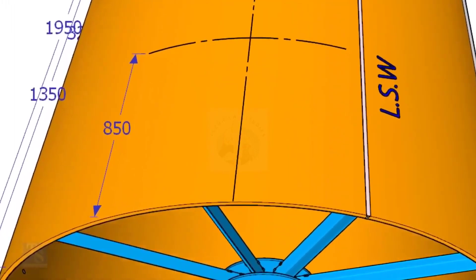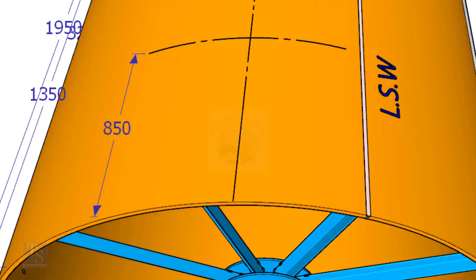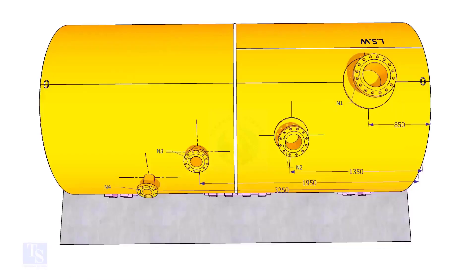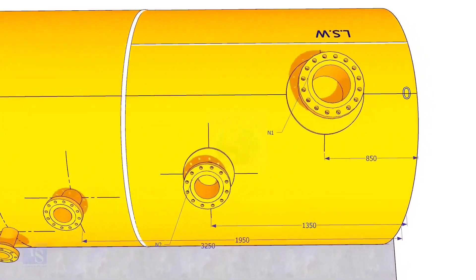Mark this distance on the end of the shell. Mark the same distance roughly 850 millimeters away from the end of the shell and draw a line. Now, mark 850 millimeters exactly on this line from the end of the shell as shown. This is the center of nozzle N1. Extend the nozzle N1 center line up to the other end of the shell and mark it as 0 degree.